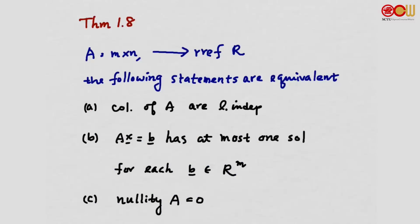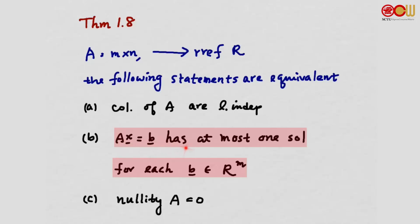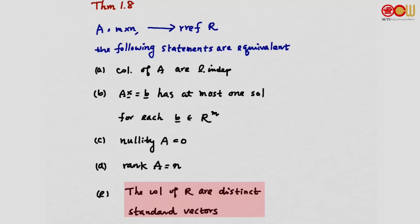Theorem 1.A summarizes equivalent statements: suppose A is an m×n matrix with reduced row echelon form R. Then the columns of A are linearly independent if and only if the system Ax = b has at most one solution for each b in R^n, which is equivalent to nullity(A) = 0, which is equivalent to rank(A) = n, which means the columns of R are distinct standard vectors.